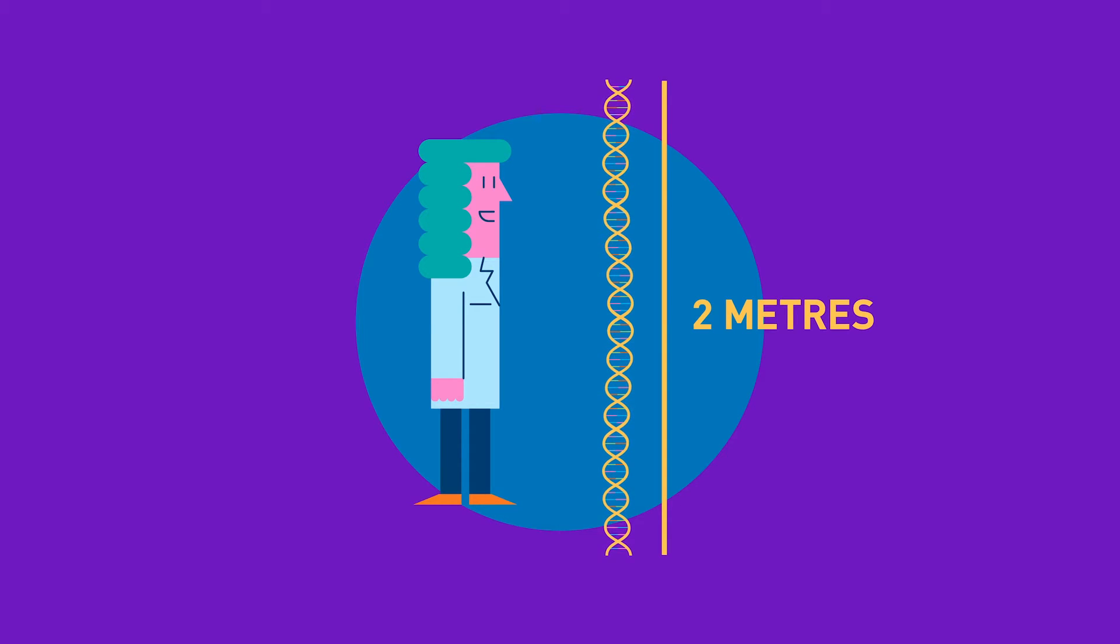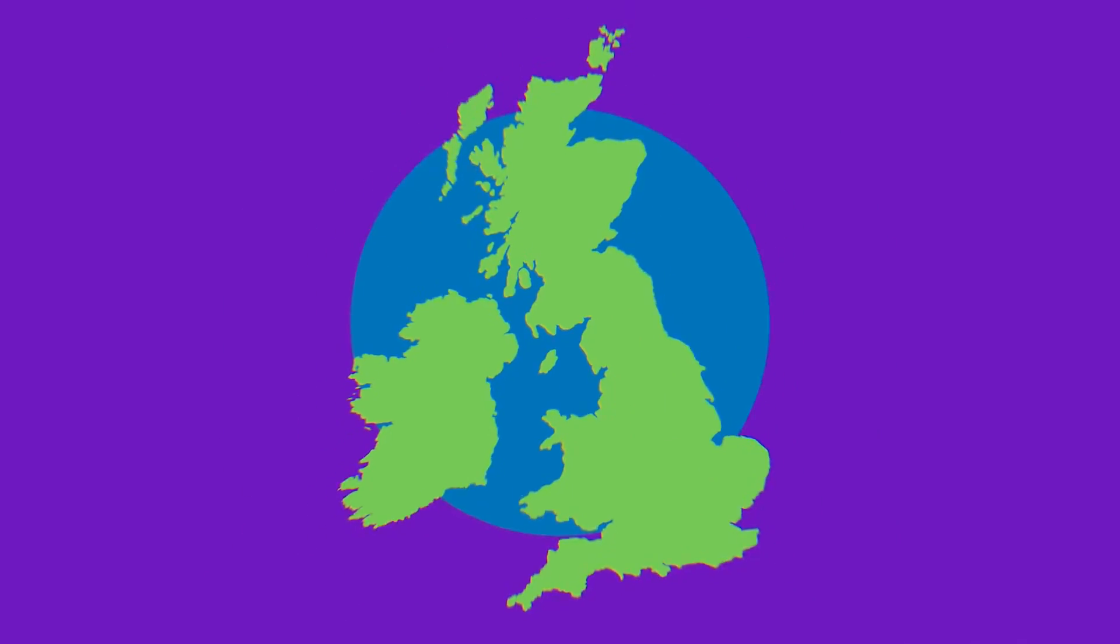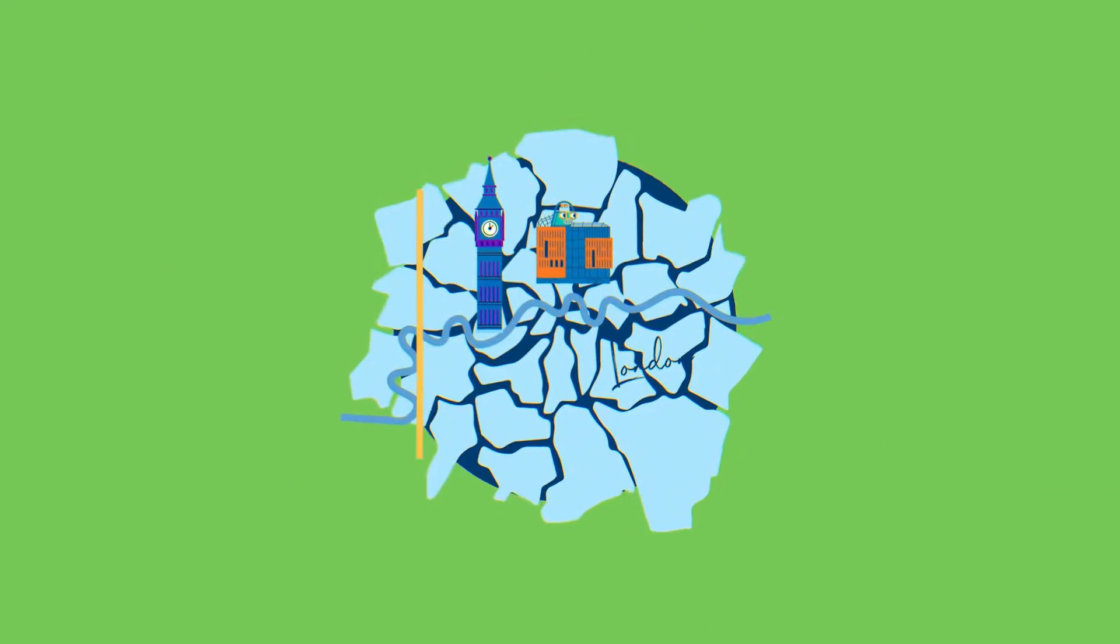That's a lot to pack into a tiny cell. To compare the scale to something big we can see, this is the same as squashing 24 miles of thin thread into a tennis ball.